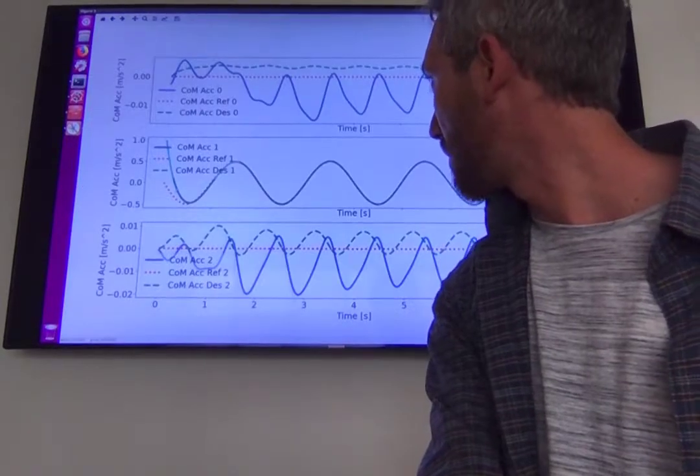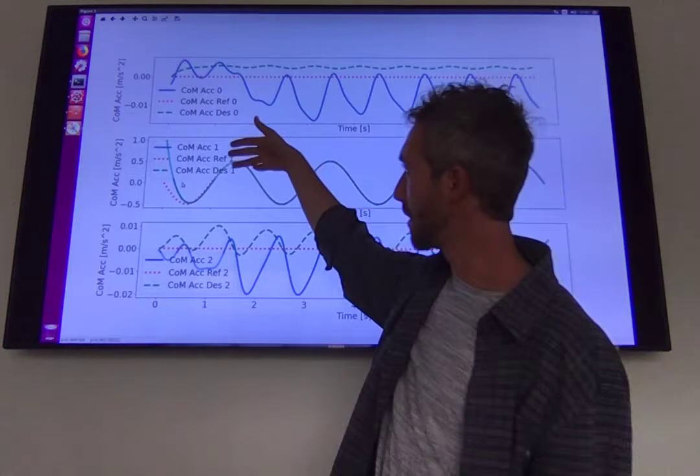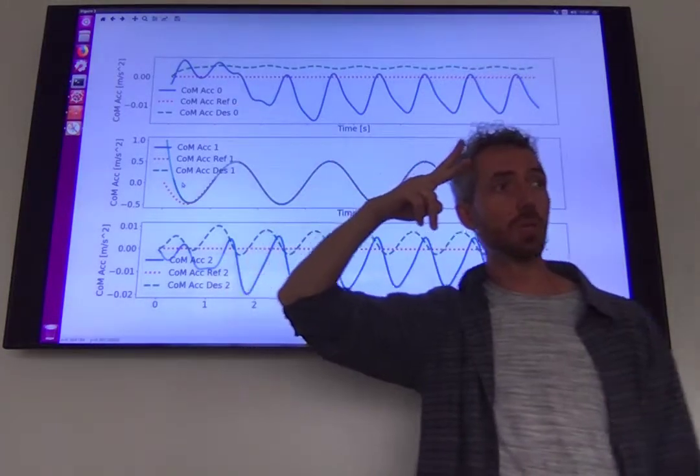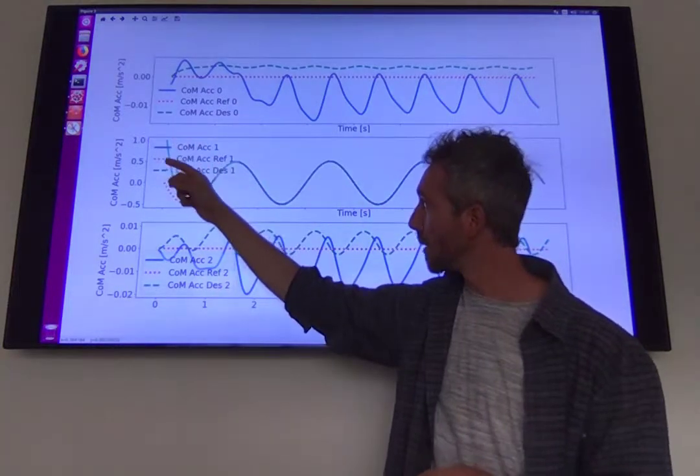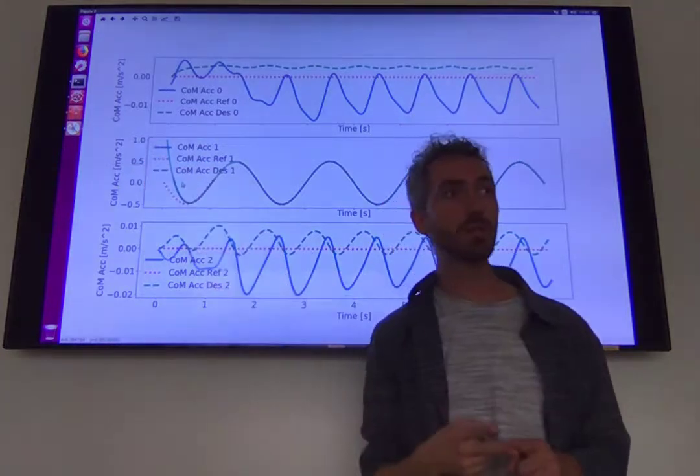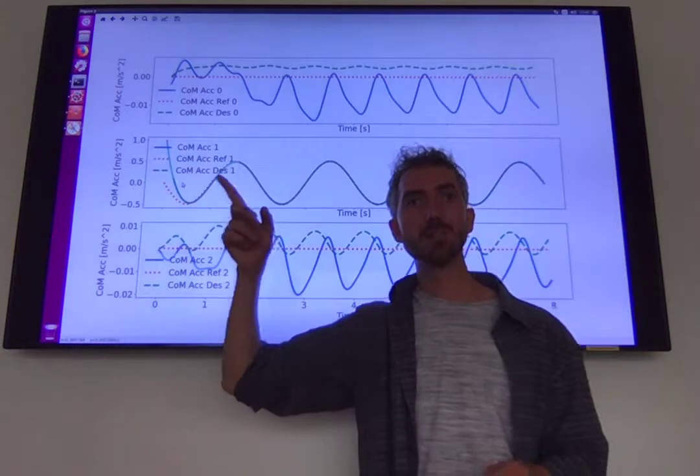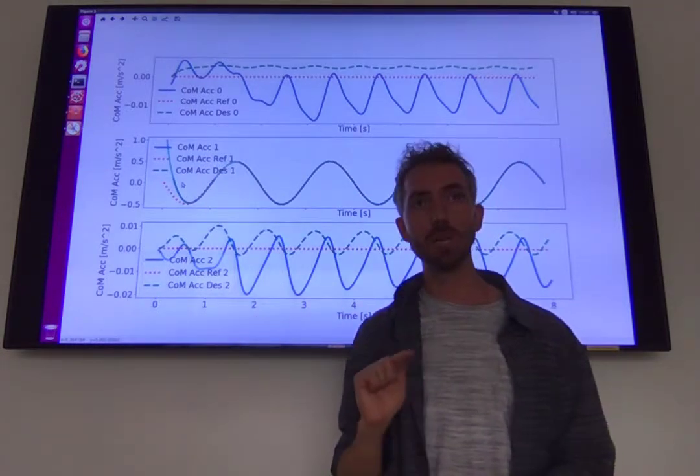We can take a look at the accelerations as we did last time for the manipulator. The acceleration plot is a bit more complicated because we have three values instead of two. We have the real acceleration, the blue curve, we have the reference which is the red curve, and then we have this extra acceleration which is the desired, which is the reference plus the PD feedback terms.